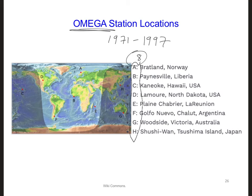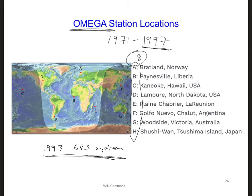In 1993, the satellite-based GPS system became operational for the first time. So there was some overlap where both the Omega system, which operated until 1997, and the GPS system, which started in 1993, were both operating. I even found documents from the 1990s mentioning that the Omega system could continue as a good backup to GPS, but apparently it was eventually believed that Omega wasn't needed, and it was discontinued in 1997.